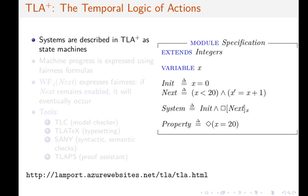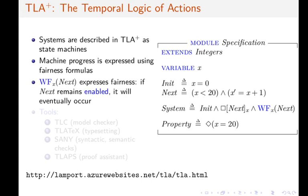The formula System allows x to remain forever unchanged. We want our state machines to eventually progress, which is why we conjoin fairness formulas.